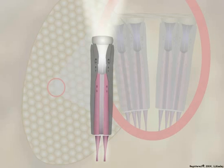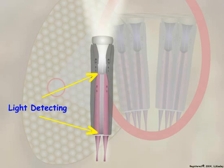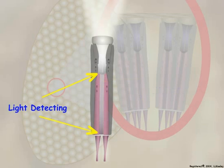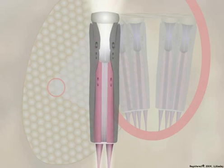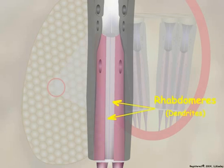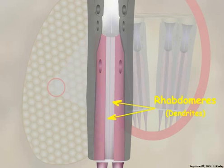The light-detecting apparatus of each ommatidium contains seven to eight light-sensitive photoreceptor cells called retinula cells. Retinula cells are actually photoreceptor neurons that detect wavelengths of light. The light-sensitive dendritic region of the retinula cell is the rhabdomere. Together, all of the individual rhabdomeres are referred to as the rhabdom.